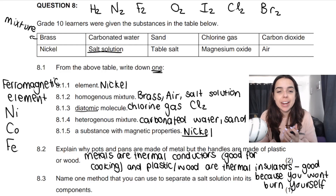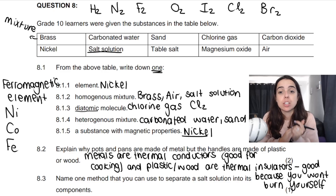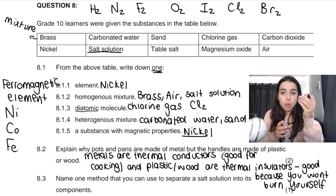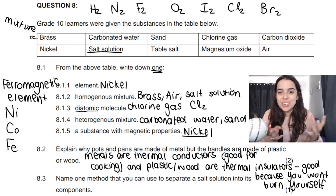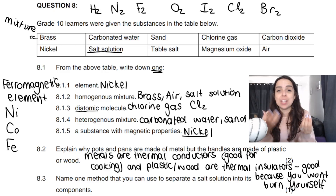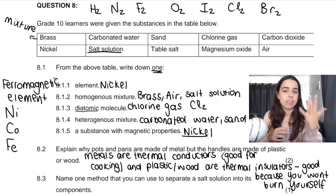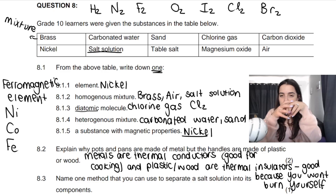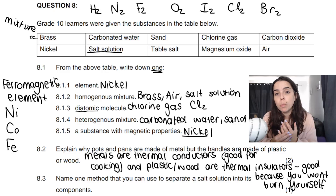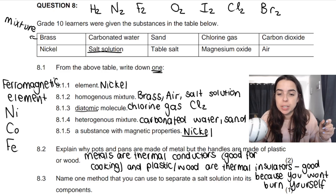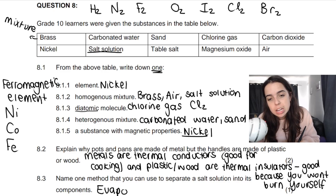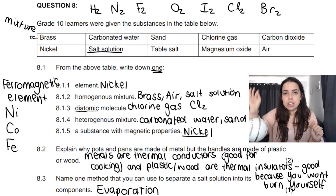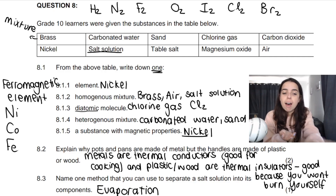Then 8.3: name one method you can use to separate a salt solution into its components. A salt solution has a solute — the salt — and a solvent — most likely water. How do we get those components separate again? One way is evaporation, a physical method to separate mixtures. What happens is the solvent or water will evaporate — going from liquid to gas — leaving the container and leaving behind the salt.